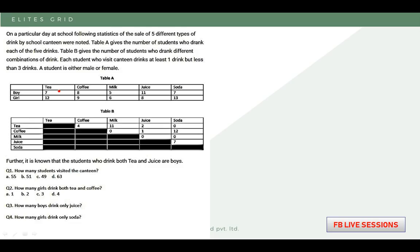This means that persons will be present for only tea, only coffee, only milk, only juice, only soda. Also combinations like tea plus coffee, tea plus milk, tea plus juice, tea plus soda, then coffee plus milk, coffee plus juice, coffee plus soda. Similarly, whatever two-to-two combinations are possible, all those persons will be present.